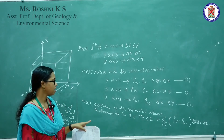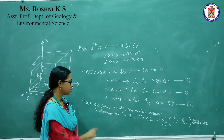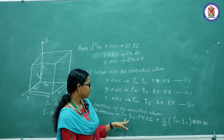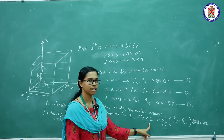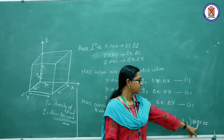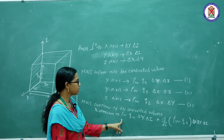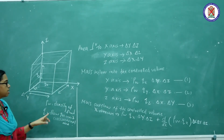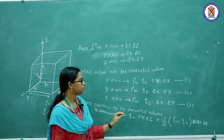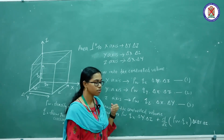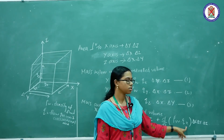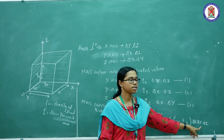Let us consider the mass outflow of the controlled volume. The mass outflow of the controlled volume in the x-direction is given by the equation: rho_w into qx into delta y into delta z, plus d/dx of rho_w into qx into delta x into delta y into delta z. Here, rho_w represents the density of the fluid, qx is the flow per unit cross-sectional area, and delta y and delta z represent the area of the plane through which water is flowing.